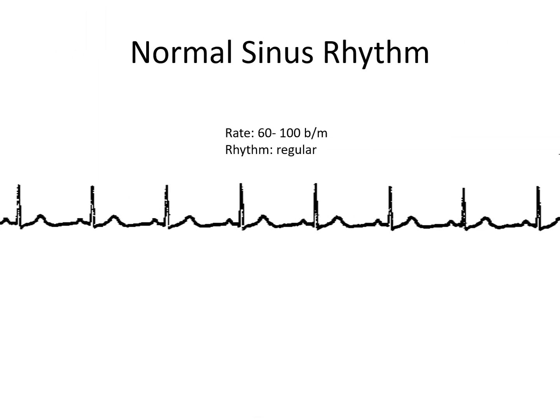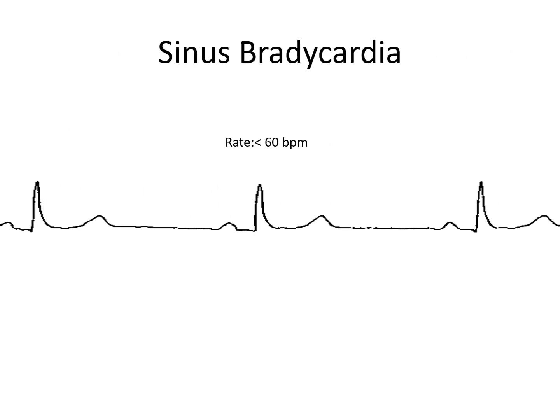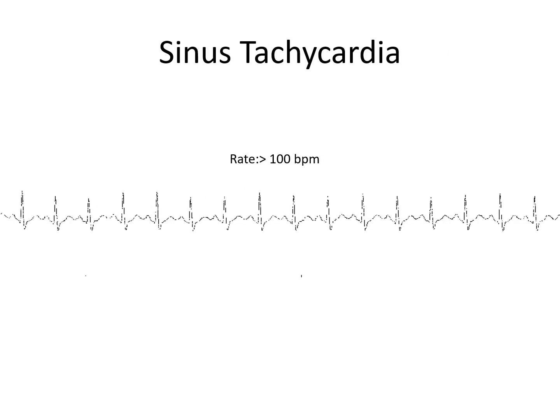This is a quick recap of some of the cardiac rhythms which we should know. Normal sinus rhythm heart rate is 60 to 100 beats per minute. Sinus bradycardia heart rate is less than 60 beats per minute. Sinus tachycardia heart rate is more than 100 beats per minute.